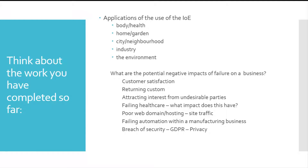There are some other things to think about: the applications of the Internet of Everything, such as body and health, home and garden, city and neighborhood, and industry and the environment. Think about the potential negative impacts of failures on businesses within these sectors — every one of those sectors has businesses that will be impacted by technology.